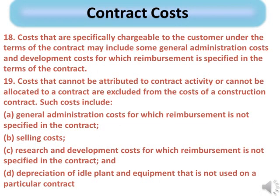Para 18: Costs that are specifically chargeable to the customer under the terms of the contract may include some general administration costs and development costs for which reimbursement is specified in the terms of the contract. Para 19: Costs that cannot be attributed to contract activity or cannot be allocated to a contract are excluded from the costs of a construction contract. Such costs include: A) general administration costs for which reimbursement is not specified in the contract; B) selling costs; C) research and development costs for which reimbursement is not specified in the contract; and D) depreciation of idle plant and equipment that is not used on a particular contract.